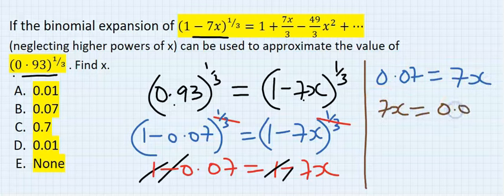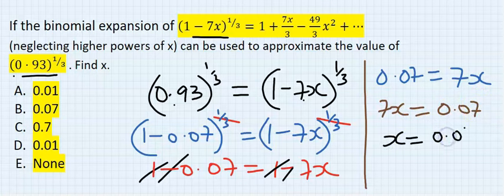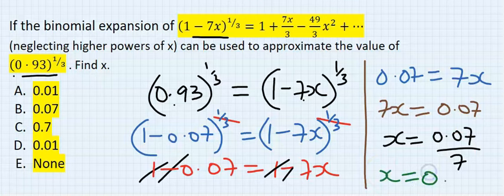So 7x is equal to 0.07. Our x is 0.07 divided by 7, and our x is equal to 0.01.